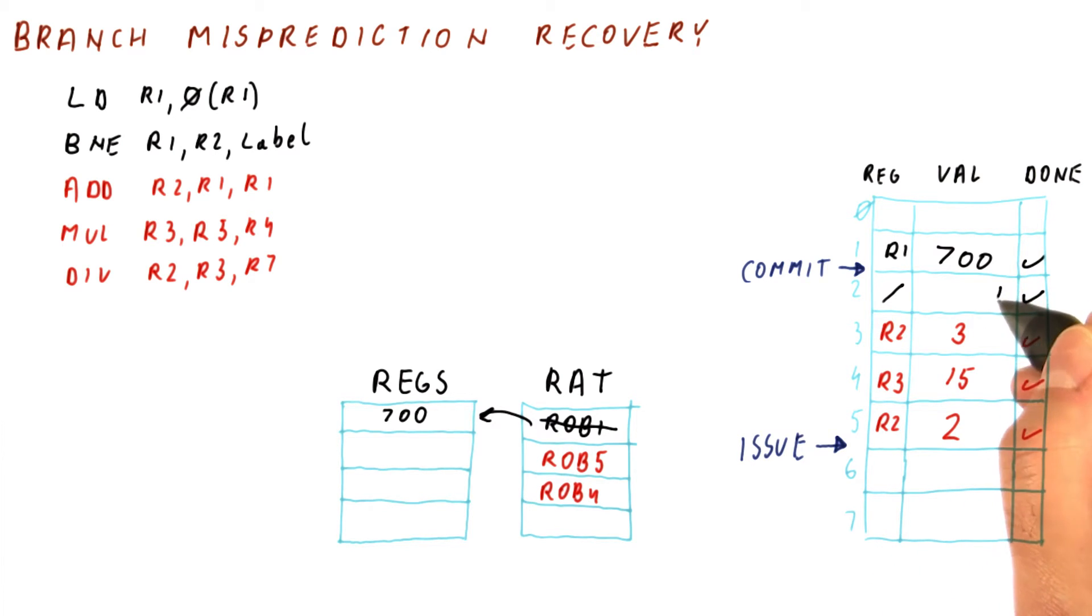Well, what we do is we annotate here that there has been a misprediction of this branch, and that's all that happens as a result of its execution. We don't really fix the misprediction. We continue fetching the wrong instructions because we don't know how to get rid of these until the commit reaches the point of the branch.